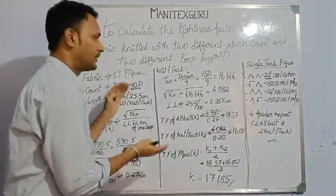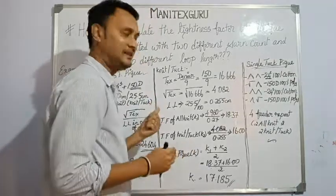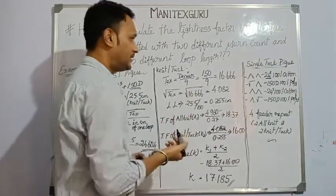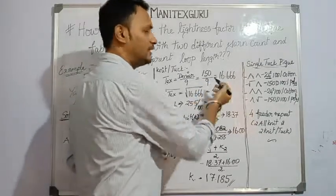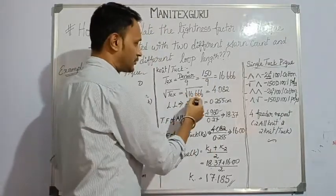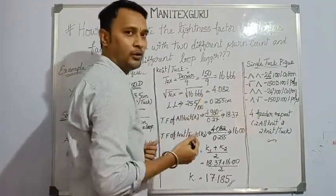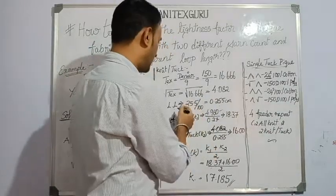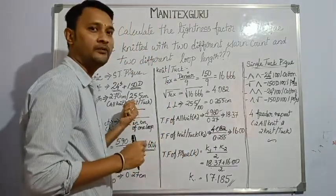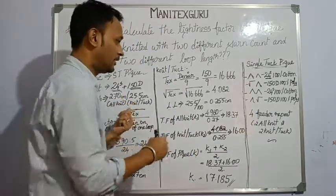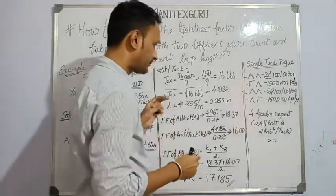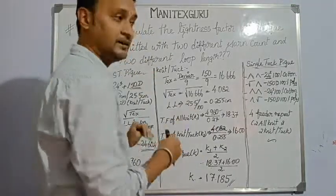In the same way, we calculate the data for knit-tuck. To convert denier to tex: tex = denier ÷ 9 = 150 ÷ 9 = 16.666. The square root of tex is √16.666 = 4.082. The loop length is 25.5 cm per 100 loops, so per one loop it is 25.5 ÷ 100 = 0.255 cm. The data for both all-knit and knit-tuck is now ready.